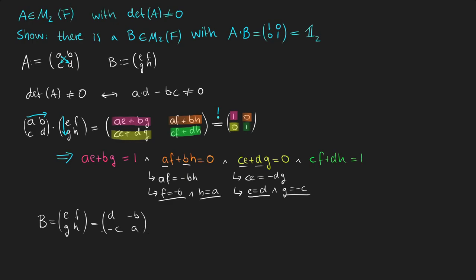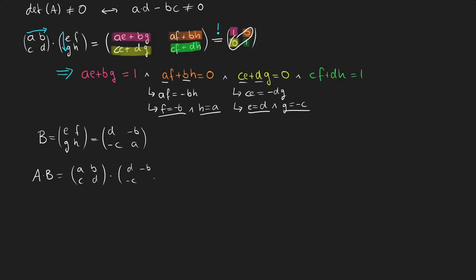And now we have expressed the matrix B dependent on the values from the matrix A. And if we now multiply A with B, those two entries should be 0, because we have deduced this information from the top right equation and the top left equation. After multiplying A with B we get this matrix here, and as you can see the top right and the bottom left entry both are 0.